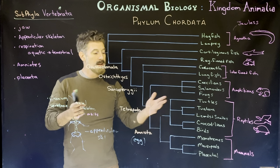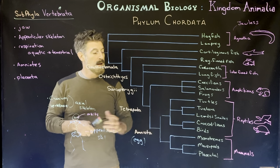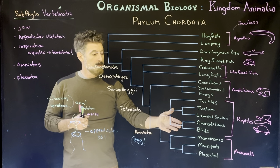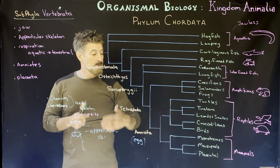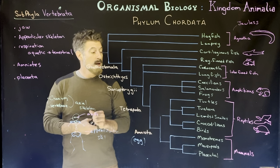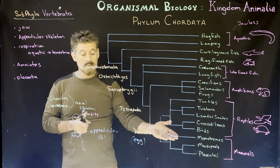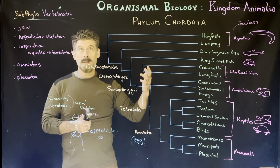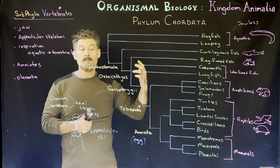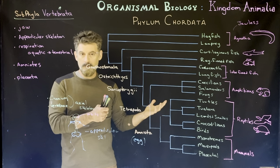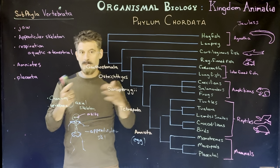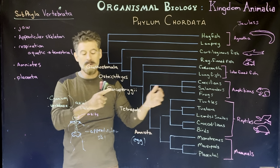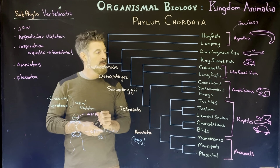These organisms essentially take the pond with them — instead of requiring external water, the young still need an aquatic environment but it's inside an egg-like structure, allowing these groups to move further onto land. Although many still have associations with water — whales, for example, are placental mammals that likely evolved from wolf-like terrestrial animals that went back into the ocean.